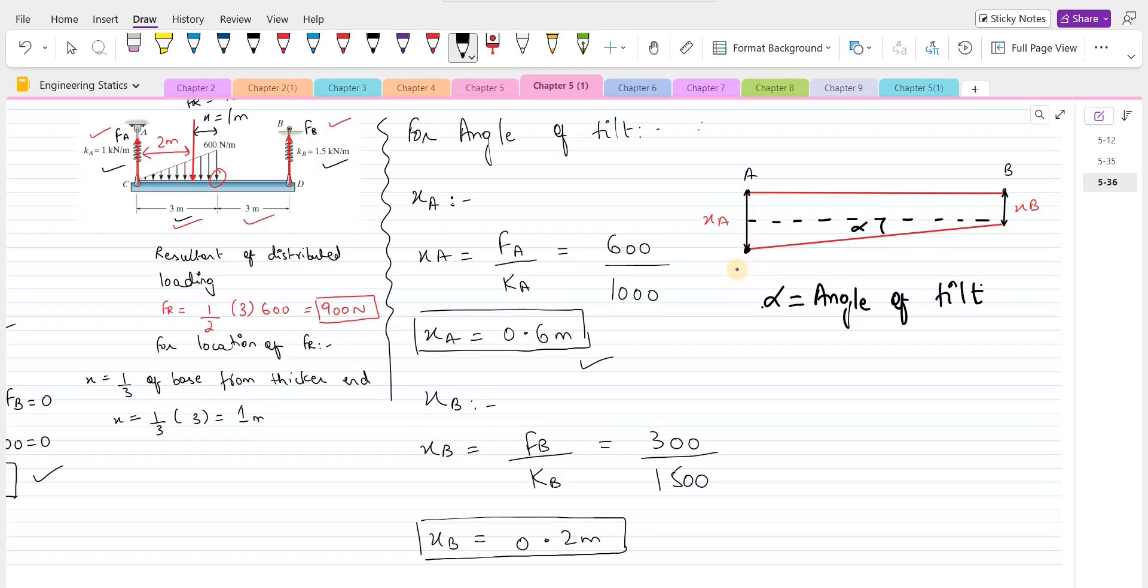So for the angle of tilt, let's consider few more points. Let's call this new position of point A as A dash and the new position of point B is B dash. And let's call this point as O.